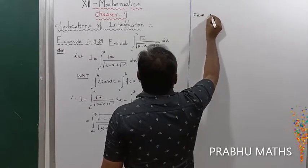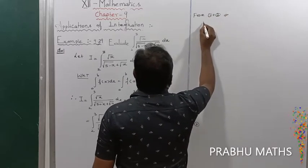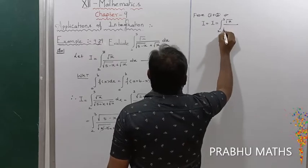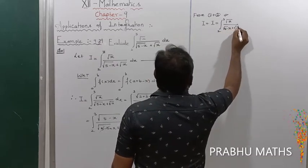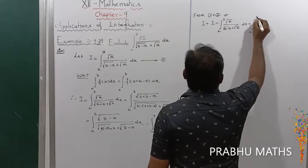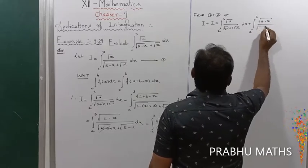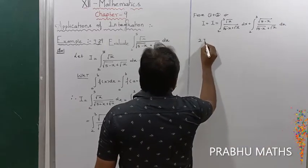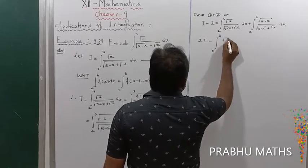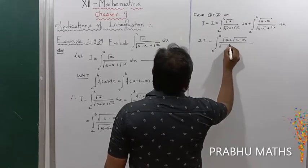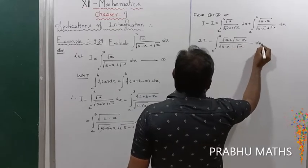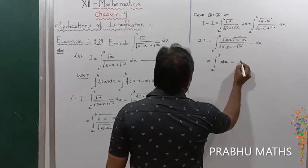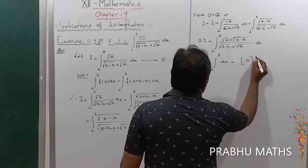From equation 1 plus equation 2: the left sides give I + I, and the right sides combine to give 2I equal to integral from 2 to 3 of (root x + root(5 minus x)) divided by (root(5 minus x) + root x), into dx. The numerator and denominator cancel, so 2I equals integral from 2 to 3 of dx only.